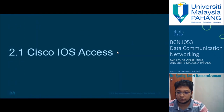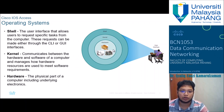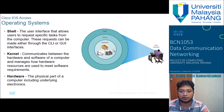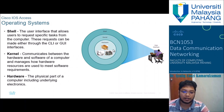Let's start with Cisco IOS access. Basically, it's an operating system consisting of shell, kernel, and hardware. The shell is the user interface that allows users to request specific tasks from the computer. The kernel communicates between the hardware and software of a computer and manages how hardware resources are used to meet software requirements. The hardware is the physical part of a computer, including the underlying electronics.